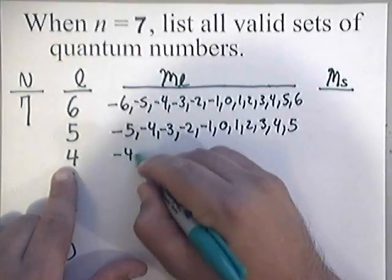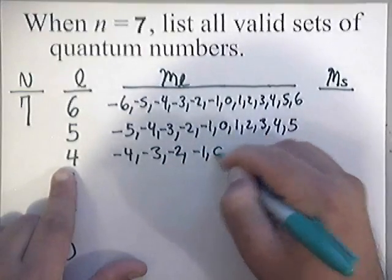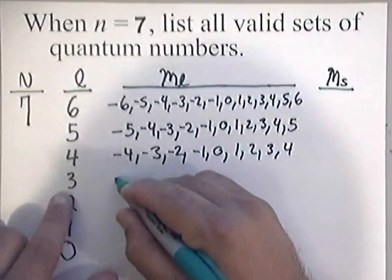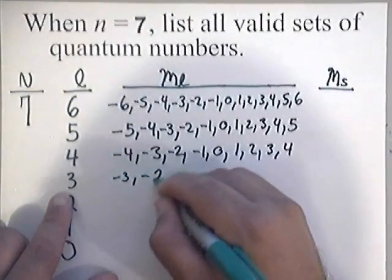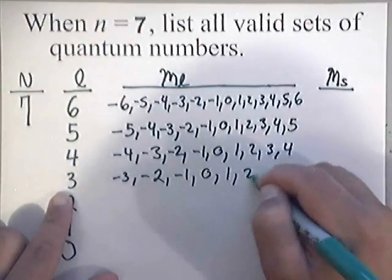And this one, of course, negative 4, negative 3, negative 2, negative 1, 0, 1, 2, 3. This one, negative 3, negative 2, negative 1, 0, 1, 2, 3.